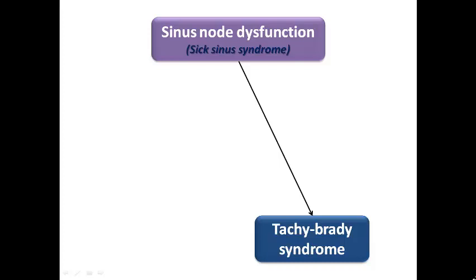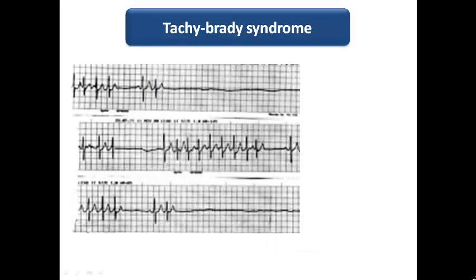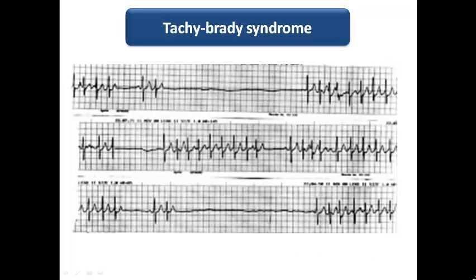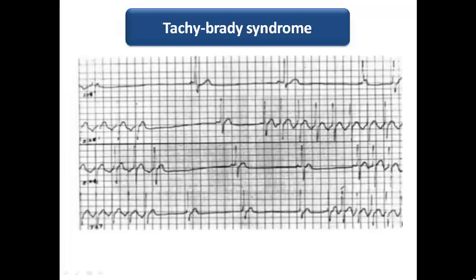Now let's explain tachy-brady syndrome. Looking at this Holter ECG, I can see that sometimes the patient has a sinus pause — something like pre-asystole, a long sinus pause — and then when the heart rate resumes, the patient has an abnormal form of tachycardia: not sinus tachycardia, but possibly atrial fibrillation or, when the rate appears regular, possibly SVT or atrial flutter. In another segment, I can see sinus bradycardia alternating with sinus pauses and episodes of regular tachycardia, which may be SVT or atrial flutter.